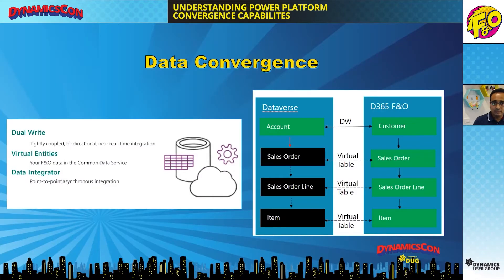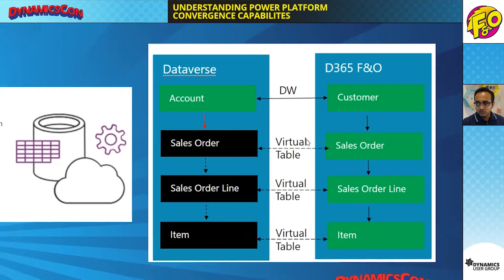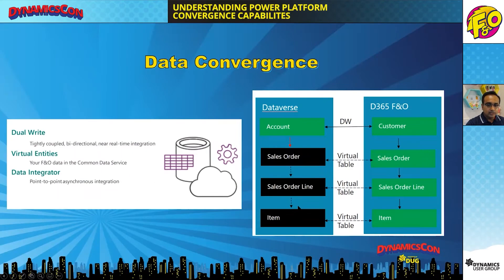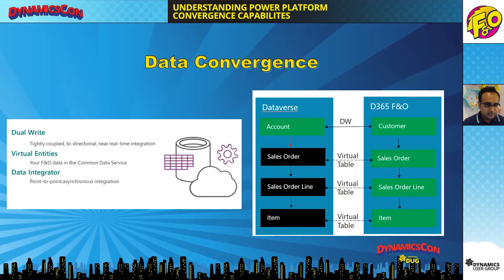These three capabilities can coexist side-by-side in an implementation — it's not that you only have to pick one. For example, there can be a scenario where your customer data is connected through Dual Write, whereas your sales orders, order lines, and items are exposed as virtual tables, and you can consume all of this in a model-driven app or a Canvas app to build your user experience.